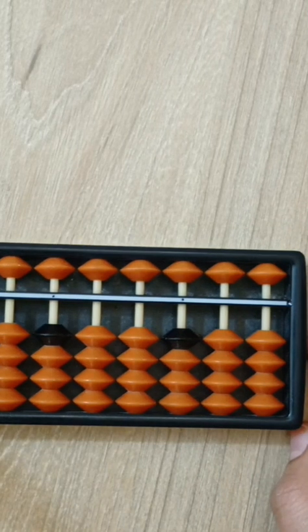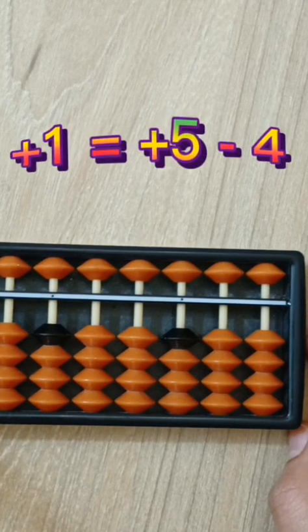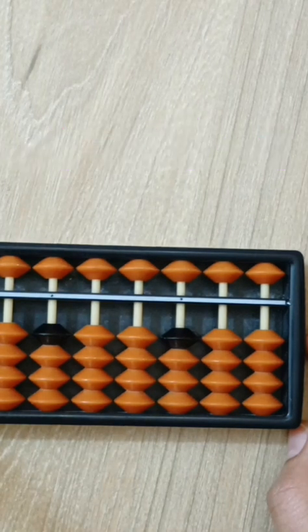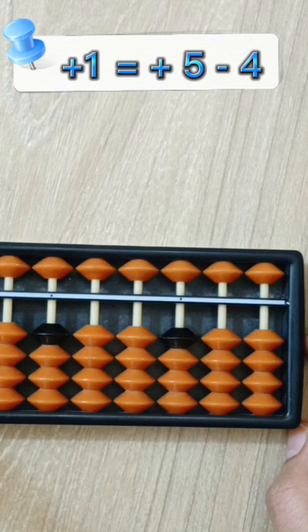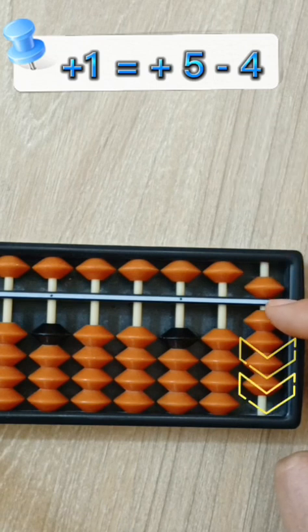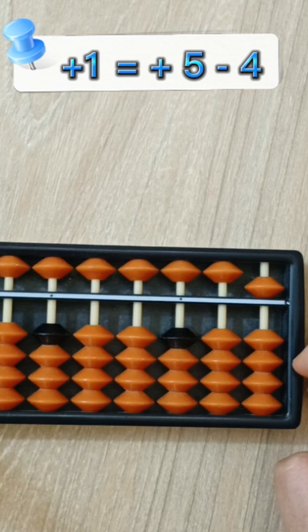let's say the rule together. Plus 1 equals plus 5 minus 4. If I want to add 1, but I don't have enough beads, first add 5. After that, take away the friend of 1, which is 4, so minus 4.